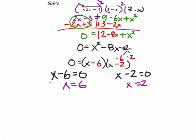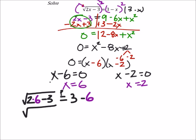So let's start with the 6. I've got the square root of 2 times 6 minus 3. Does this equal 3 minus x, which is 6? So that would be the square root of 12 minus 3 is 9. It needs to equal 3 minus 6 is negative 3. Some of you would stop there because you can see immediately that the square root of 9 is 3, which doesn't equal negative 3. So this means that 6 is not an answer.